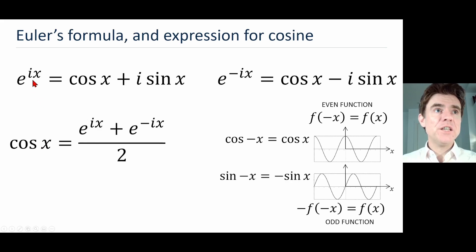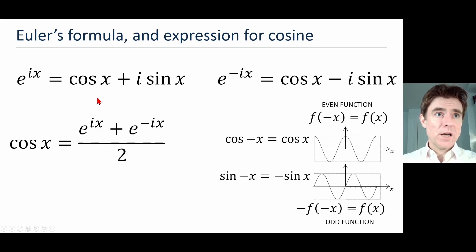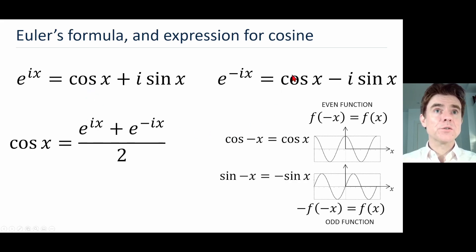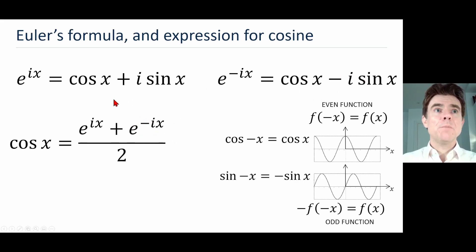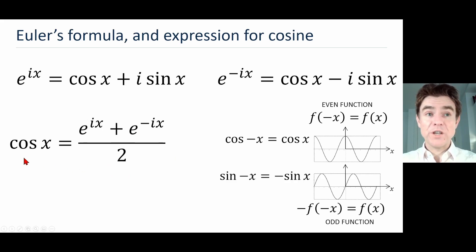This allows us to write a simple expression: adding e^(ix) to e^(-ix), we get cos x plus cos x — that's 2 cos x — while the i sin x and minus i sin x cancel out. Because we're left with 2 cos x, dividing by two gives us just cos x.